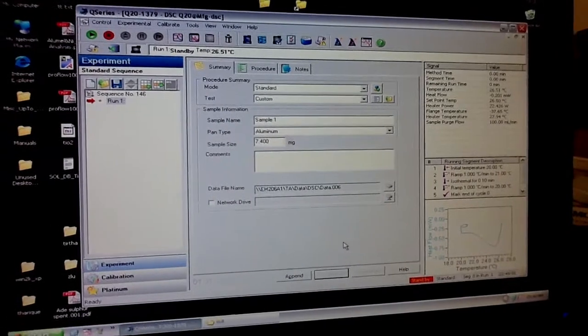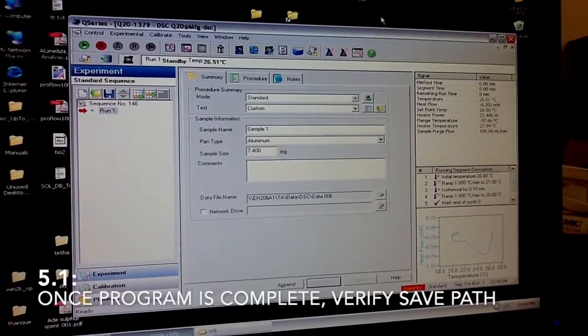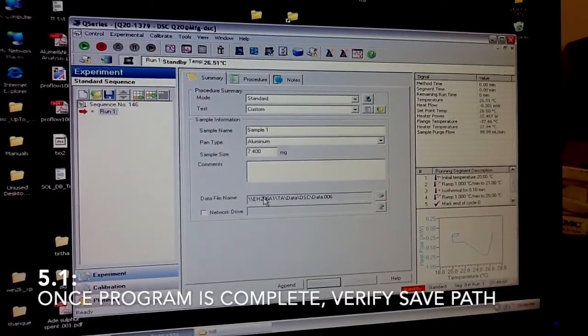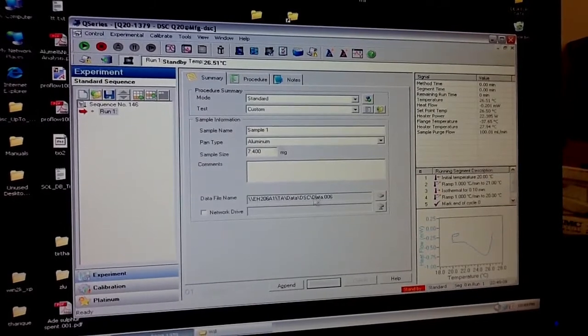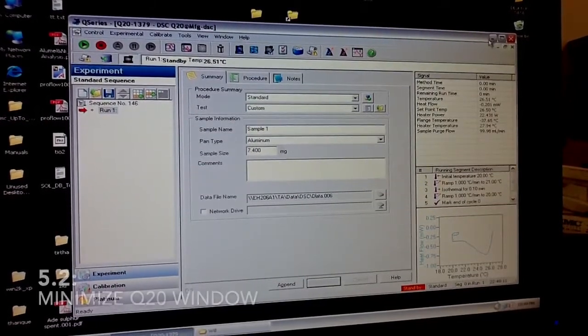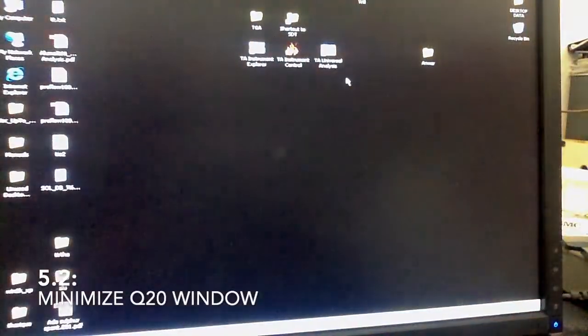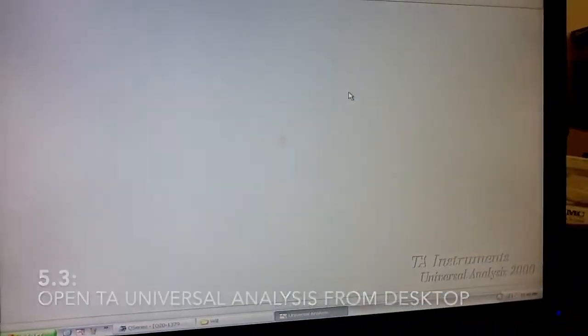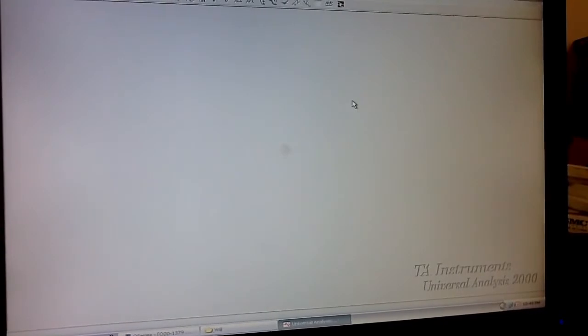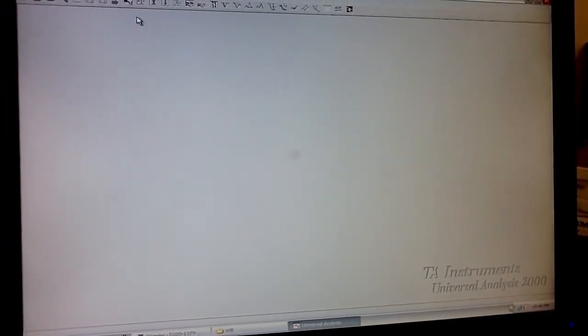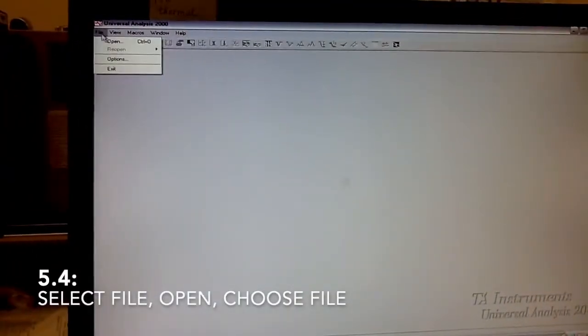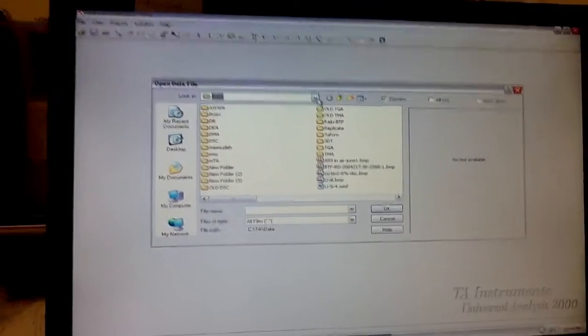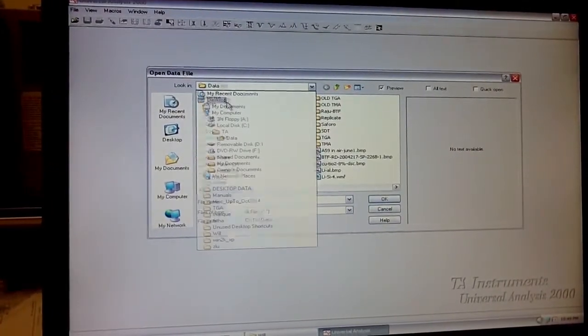So our test is complete. When you come back, it should be saved automatically in the spot that you indicated here. Once you have it, you can come to this software, TA Universal Analysis. And you can open the file from wherever it was saved.